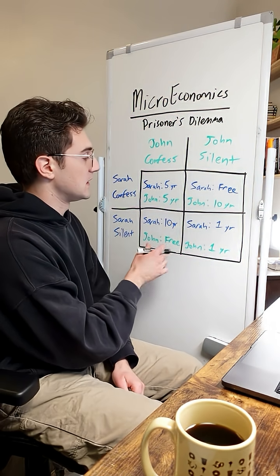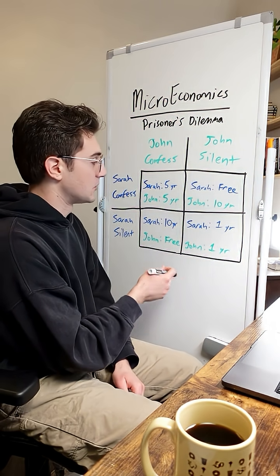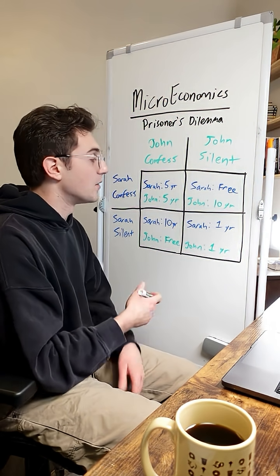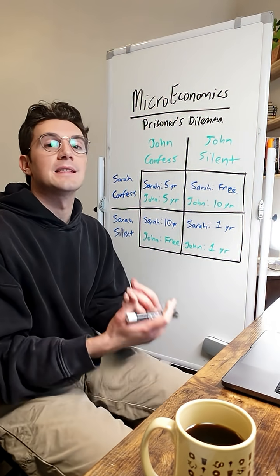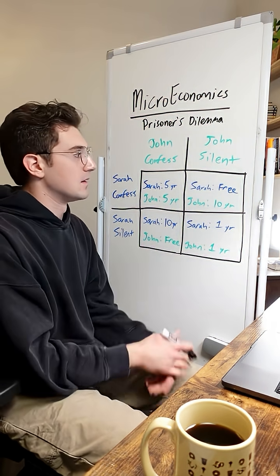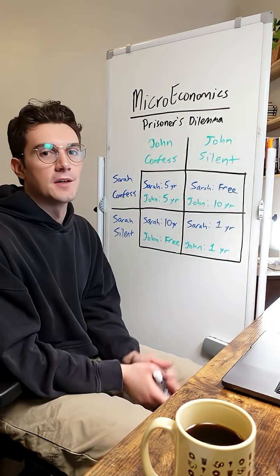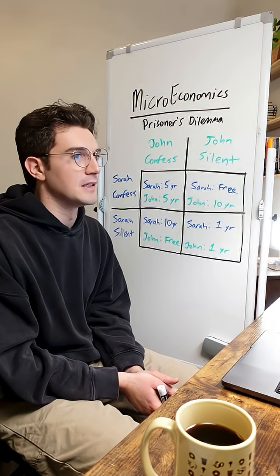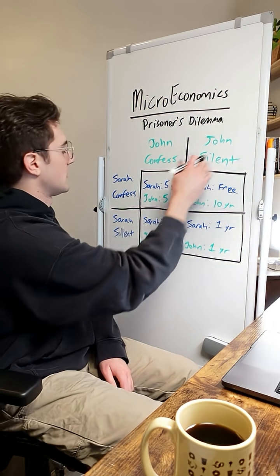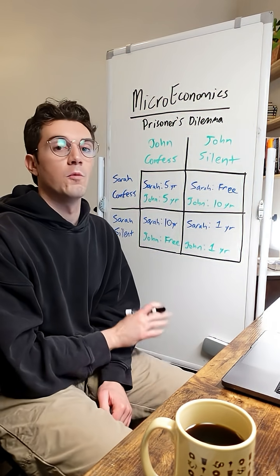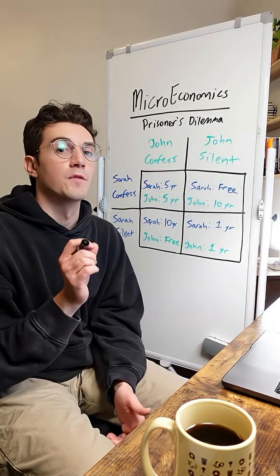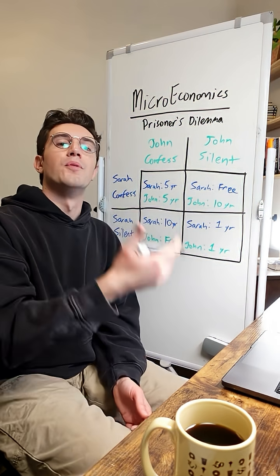The first thing I'm seeing in this payoff matrix is that this bottom right cell is the best outcome for both Sarah and John. Let's say they've both committed a crime and are being interrogated. If they both stay silent here, they both only get one year — that's the best outcome for both of them.